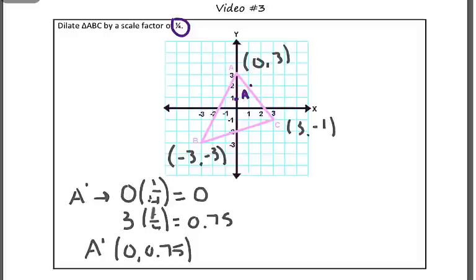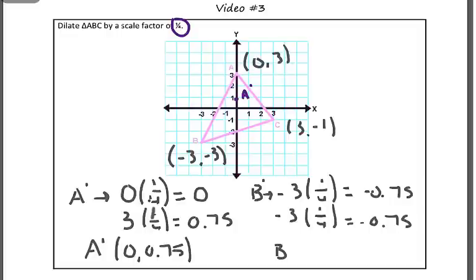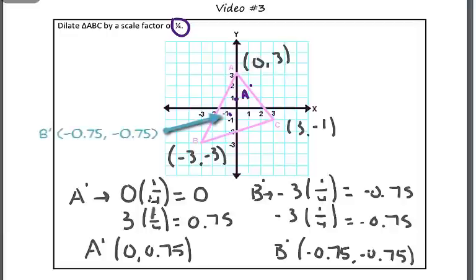And we're going to do that again for each point. So, for B prime, we're going to take both the x value and the y value and multiply it by 1 over 4, or 1 fourth. So, negative 3 times 1 fourth is negative 0.75 in both cases. So, our new point for B prime is the point negative 0.75, comma, negative 0.75. And I'm going to go ahead and plot that point, which is going to be right here. Okay, and I'm going to call that B prime.